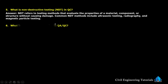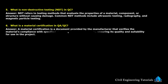Next: what is a material certification in QA or QC? A material certification is a document provided by the manufacturer that verifies the material's compliance with specified standards and requirements, ensuring its quality and suitability for use in the project.